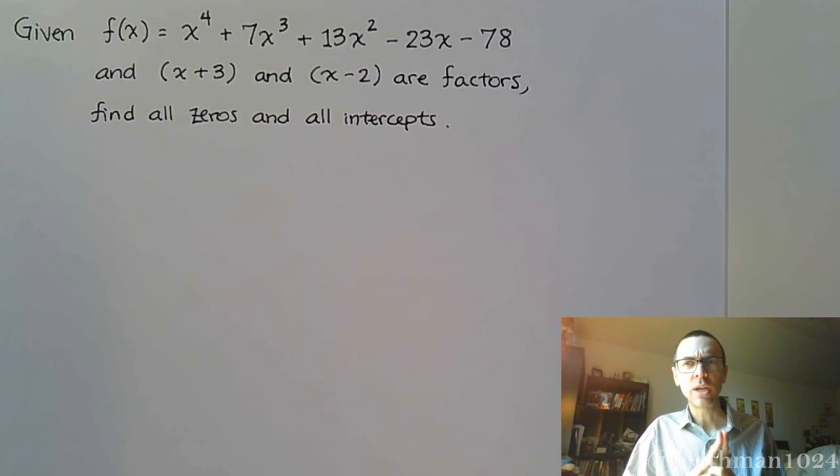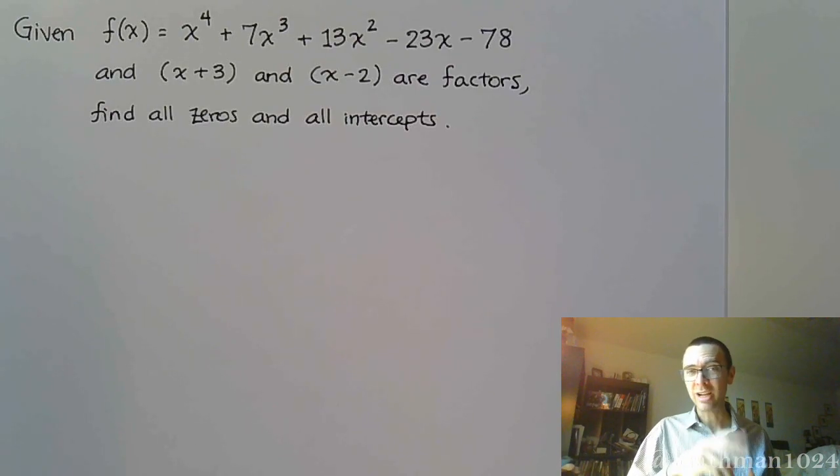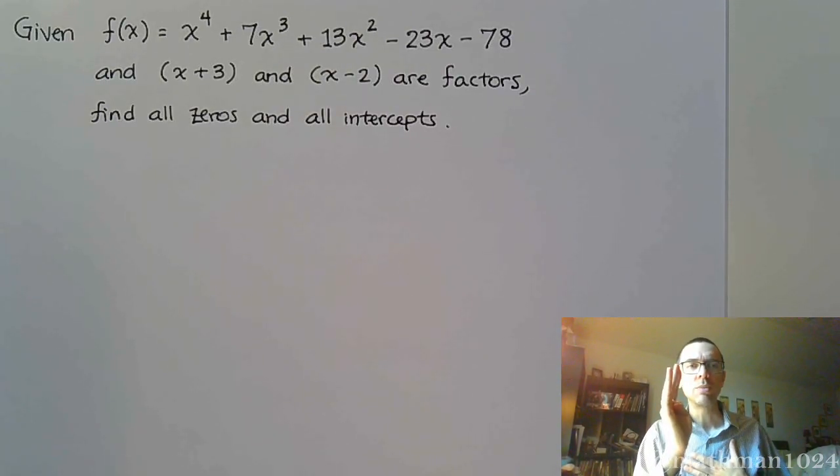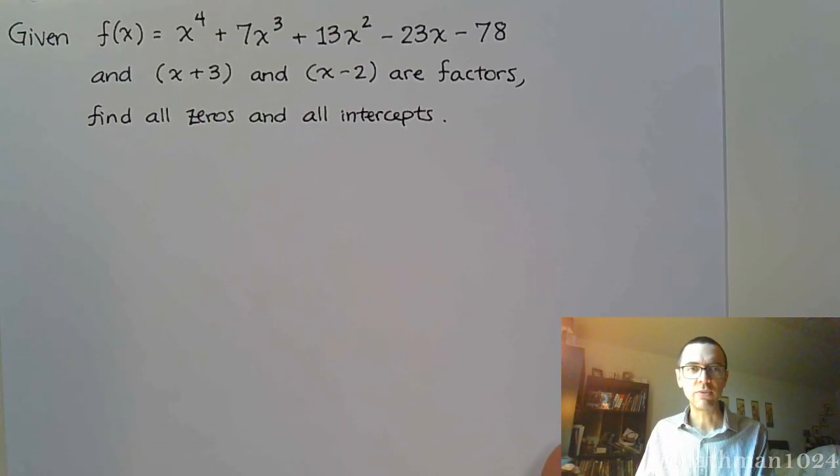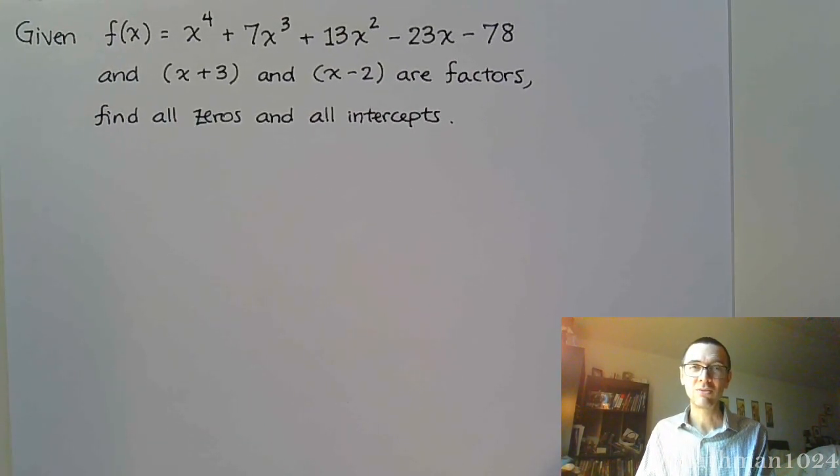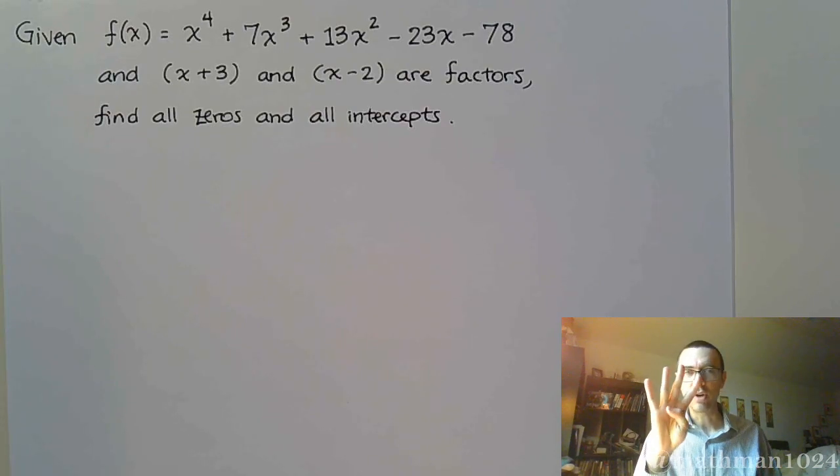Now, sometimes the zeros occur more than once. So you might have that x equals 3 shows up once and it shows up a second time. That's called a multiplicity, and we're going to see that later on. But we know we're going to have 4 zeros, and here's the problem that we run into. We don't have techniques available to us right now to handle something that's of degree 4.